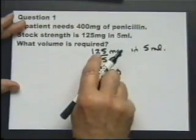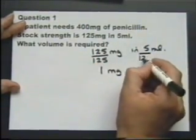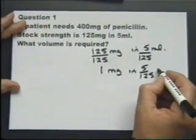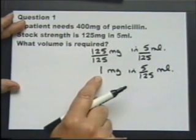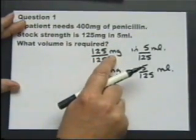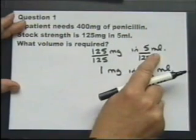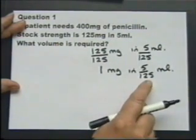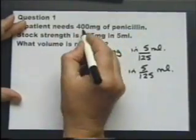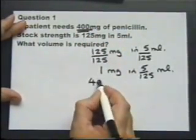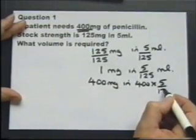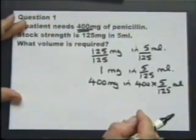If we divide the 125 by 125, we must also divide the five by 125. This is called the unitary method — we're working out one. We're told that 125 milligrams are found in five millilitres, so dividing by 125 tells us that one milligram of penicillin is found in 5/125 of the medicine. We can now work out that 400 milligrams will be found in 400 multiplied by this fraction.